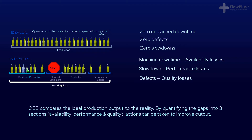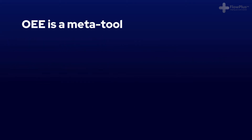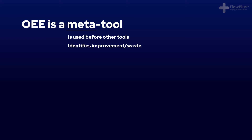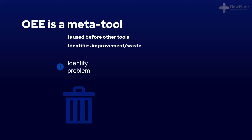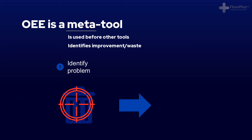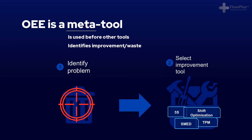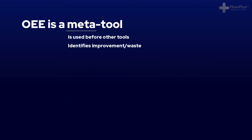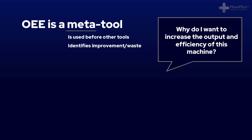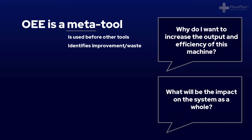Before going on to explain how to calculate OEE, there first must be a need for calculating OEE. OEE is a meta tool in the sense that it doesn't generate an improvement itself, but helps identify areas for improvement, much like value stream mapping or spaghetti diagrams. OEE should be calculated for the specific reason to help identify improvements to a machine's output and efficiency. Before calculating OEE, you should ask yourself: why do I want to increase the output and efficiency of this machine, and what will be the impact on the system as a whole?